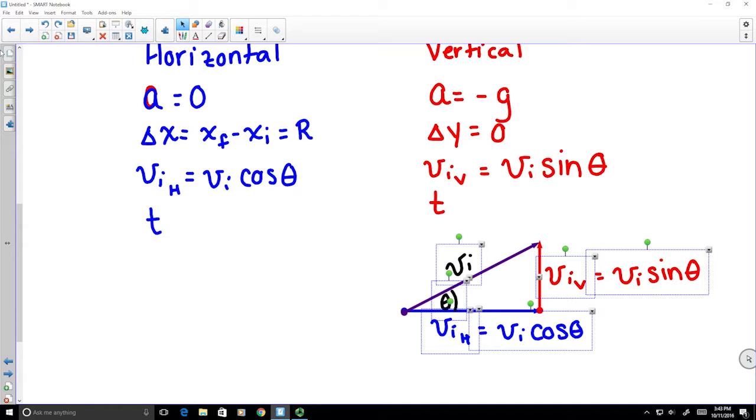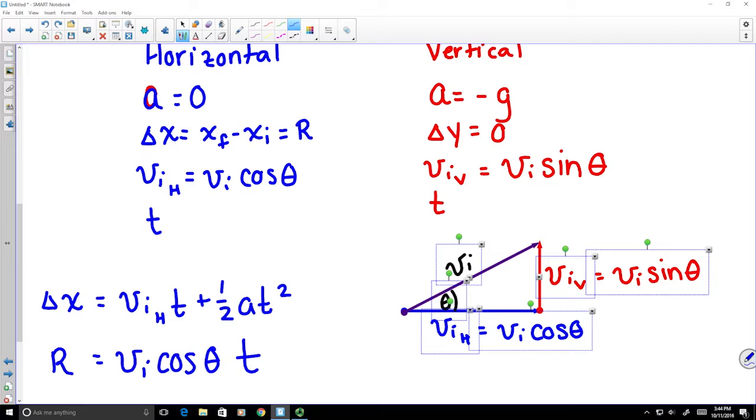Let's write down the equation of kinematics for our horizontal motion. If we look at our equations of kinematics, we'll see that one of them contains the acceleration, the displacement, the Vi, and the time. And if we substitute what we know, this will simplify.